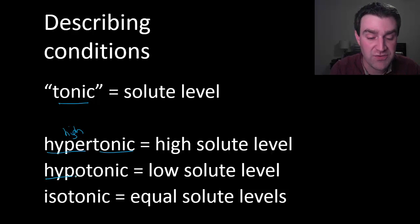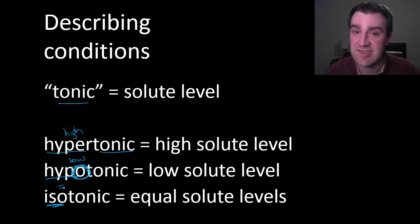Hypo on the other hand is a root word meaning low. Sometimes I have students think that hypo rhymes with low, and so a hypotonic area has a very low solute level. Finally, if two areas are isotonic to each other, iso means equal, like an isosceles triangle has two sides of equal length.